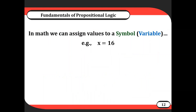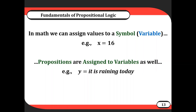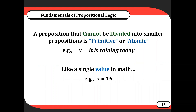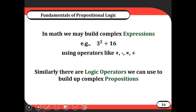In math we can assign values to a symbol, which is a variable — for example, x equals 16. We can do the same thing with propositions and assign them to a variable. We can say y is equal to the proposition 'it is raining today,' and this can help make logic expressions easier to work with. A proposition that cannot be divided into smaller propositions is called primitive or atomic. 'It is raining today' is a primitive or atomic proposition — it has exactly one truth value.